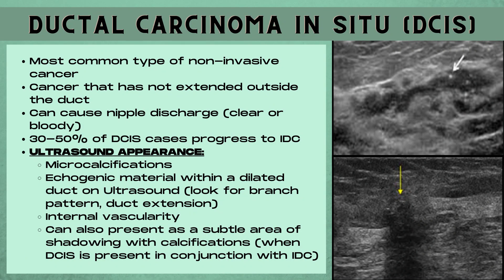Ductal carcinoma in situ, or DCIS, is the most common type of non-invasive breast cancer. This is cancer associated with the duct that has not extended outside the basement membrane of the duct — it's still contained by the duct. DCIS can cause nipple discharge, usually clear or bloody in color, and 30 to 50 percent of DCIS cases progress to invasive ductal carcinoma. Ultrasound appearance includes microcalcifications — very tiny calcifications — echogenic material within a dilated duct, branch pattern and duct extension, internal vascularity, and it may also present as a subtle area of shadowing with calcifications, particularly when DCIS is present in conjunction with invasive carcinoma.